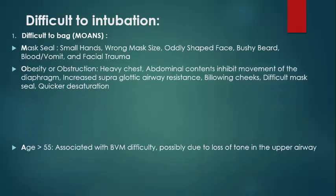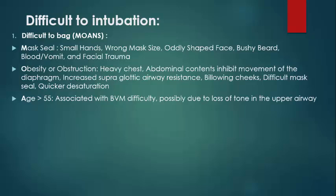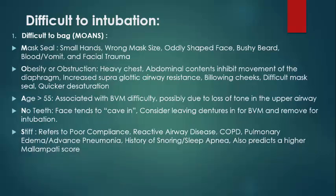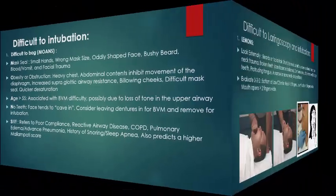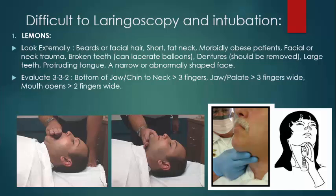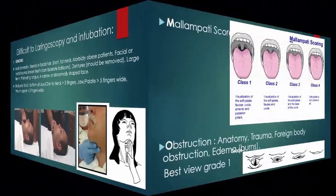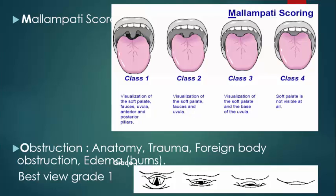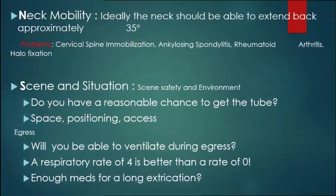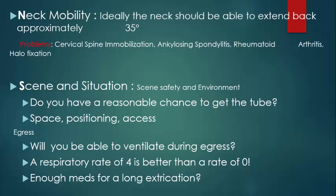Difficult laryngoscopy and intubation can be assessed using the LEMON mnemonic: Look externally, Evaluate 3-3-2, Mallampati score, and Grade 1 assessment. Also consider neck mobility and patient scan and situation.